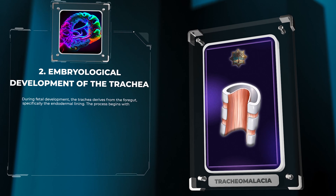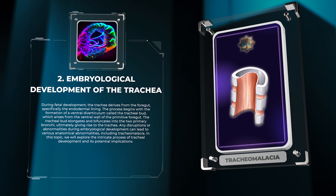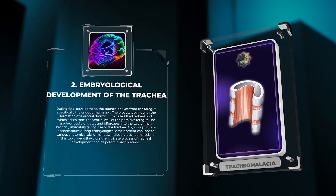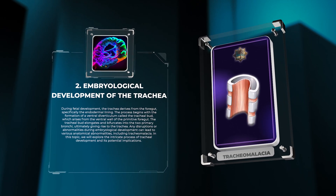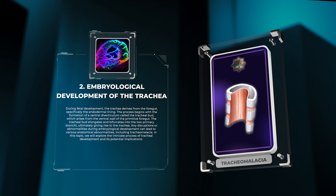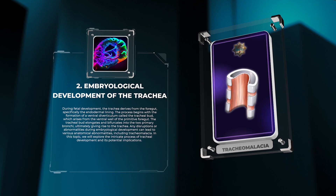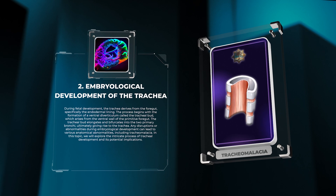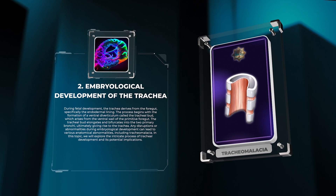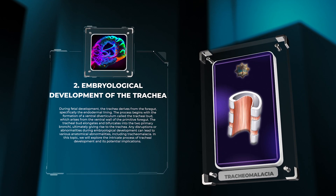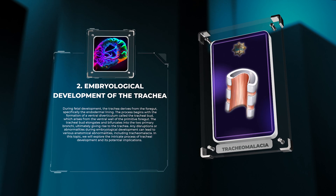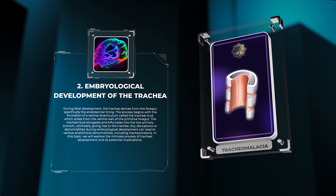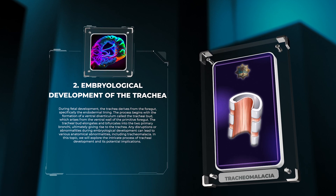During fetal development, the trachea derives from the foregut, specifically the endodermal lining. The process begins with the formation of a ventral diverticulum called the tracheal bud, which arises from the ventral wall of the primitive foregut. The trachea elongates and bifurcates into the two primary bronchi. Any disruptions or abnormalities during embryological development can lead to various anatomical abnormalities, including tracheomalacia.